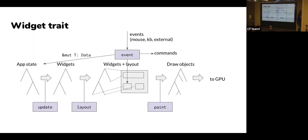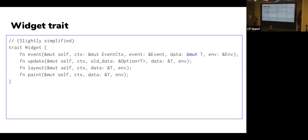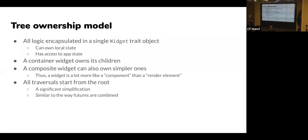That's reflected in the code: there are four basic methods in the widget trait encoding those four different phases, those four different transformations from one tree to another. We have an ownership model which is extremely tree-based. Compared to a talk I gave at Mozilla about a year and a half ago where I had a more graph-like structure and cared less about developer experience — wiring everything by hand — we now have this tree ownership model. If you have a container, it simply owns all of its children. All that stuff where you needed shared references to update state now happens by traversing down from the top of the tree.